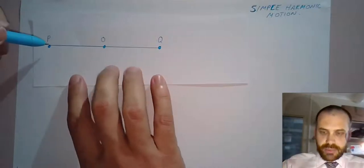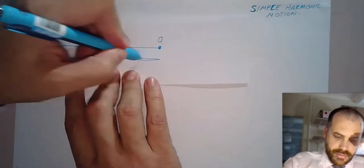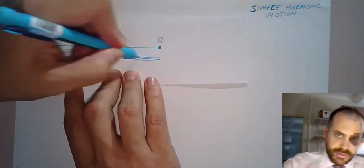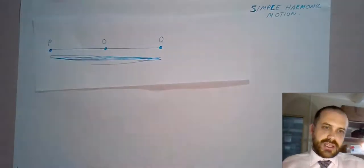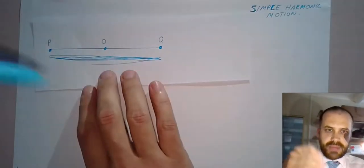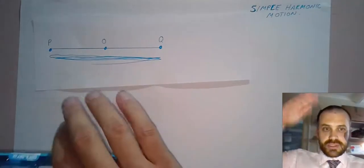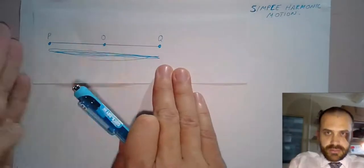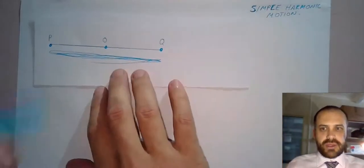Imagine some object starting at this point P and moving this way, then turning around and moving backwards and forth. You've seen this before - a pendulum swinging backwards and forth, a spring springing. This kind of thing is called simple harmonic motion.